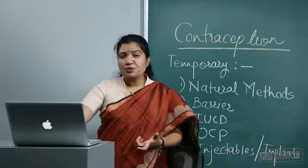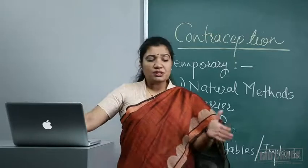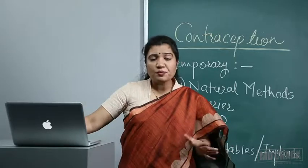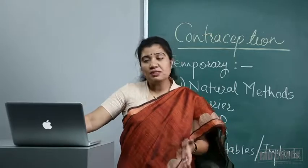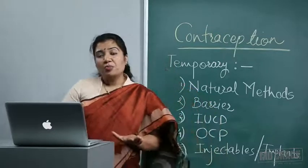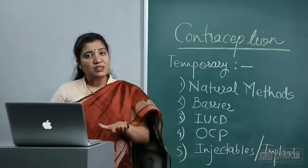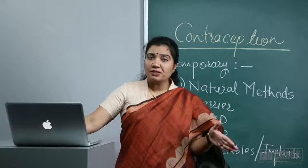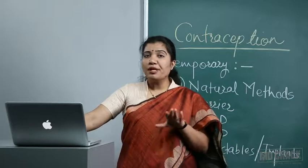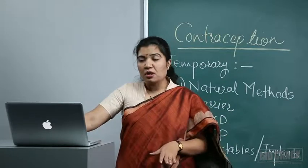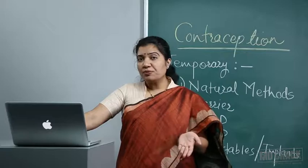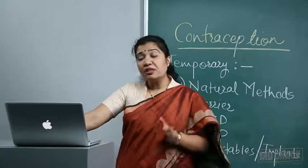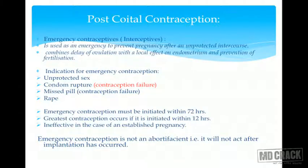Post-coital contraception is also called emergency contraception. It is technically not contraception because it does not prevent contact of sperm and ovum; it is an interceptive, used when unprotected coitus has taken place to avoid implantation. It is used as an emergency to prevent pregnancy after unprotected intercourse.